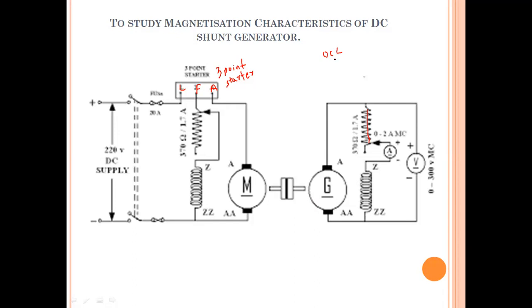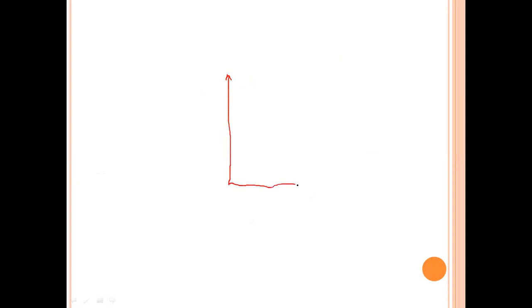This is the arrangement for the magnetization curve or OCC. We already discussed the OCC in detail in the theory part. OCC is the curve between E0, that is the no-load voltage, and IF, that is the field current.